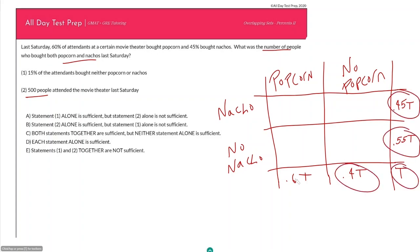What was the number of people who bought both, and so this is the box that we are looking for. Statement one: 15 percent of the attendance bought neither popcorn or nachos, so that's 15 percent of my total people, so that means this box here should be 0.15T. That means 25 percent of my people bought nachos but no popcorn, because this is 0.25T, because this box here plus this box here has to sum up to 0.4T. So this information is both from statement one, so I'm gonna put a little one in the corner here.